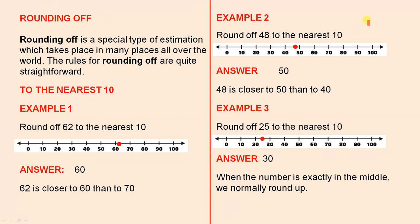Example 2: Round off 48 to the nearest 10. There's 48 on the line. You can see that it's very close to 50. So to the nearest 10 the answer is 50. So 48 is closer to 50 than to 40.